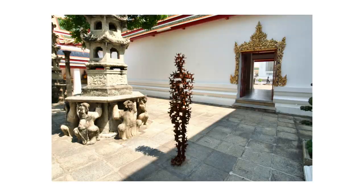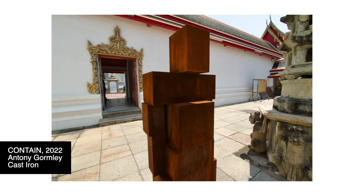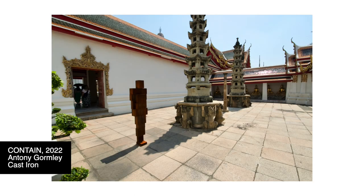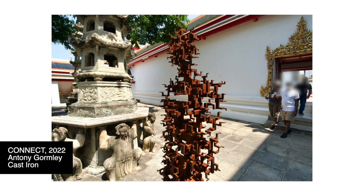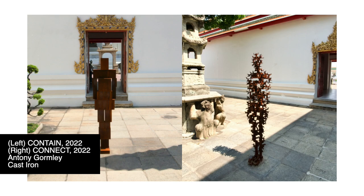This pair of sculptures by British artist Anthony Gormley is named Content and Connect. They are installed inside Wat Po, also known as the Temple of the Reclining Buddha, each in their own different courtyard next to each other. Because we could see one of them as being Chaos while the other is Calm, we could interpret that maybe Chaos and Calm are closer than we think.